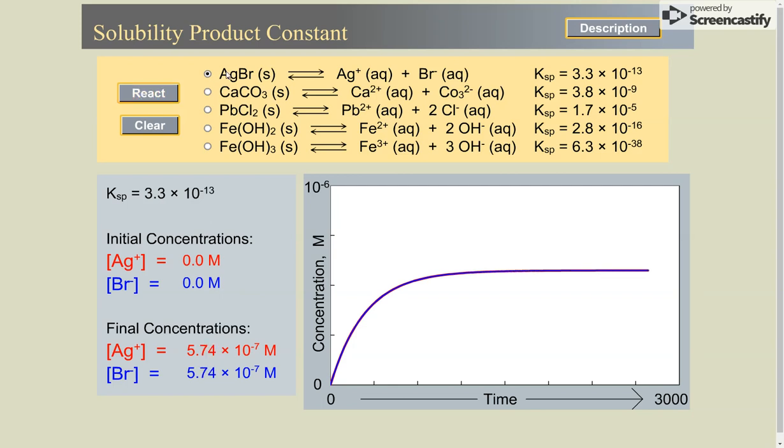And eventually, as the silver bromide dissolved, I got more and more silver and bromide ions until it reached an equilibrium. And I have equal amounts of silver and bromide ions. I don't have more of one than the other because I have one silver bromide reacting to form one silver ion and one bromide ion.